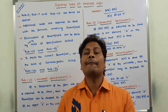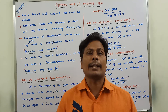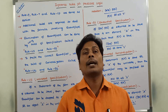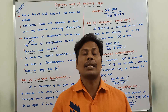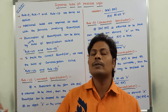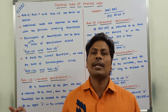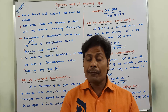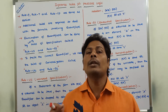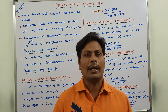For eliminating the universal quantifier or existential quantifier from a given formula, we use rules of specification — that is rule US and rule ES. To prefix the quantifier before the formula, we use rules of generalization — that is rule UG and rule EG.